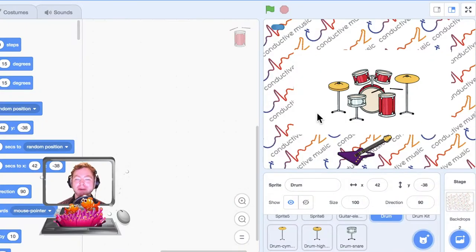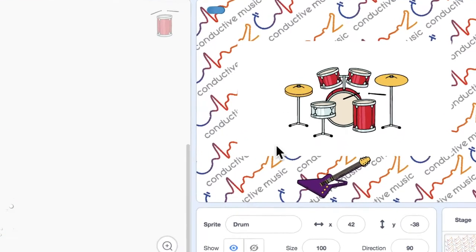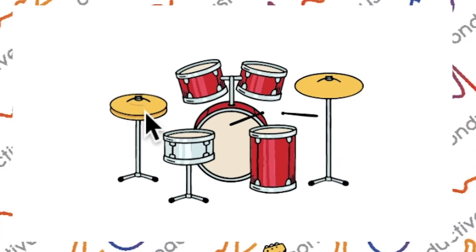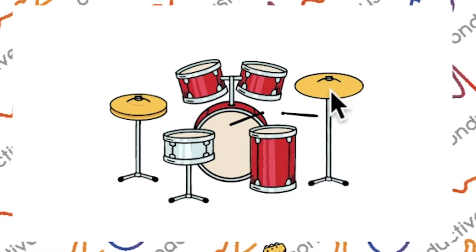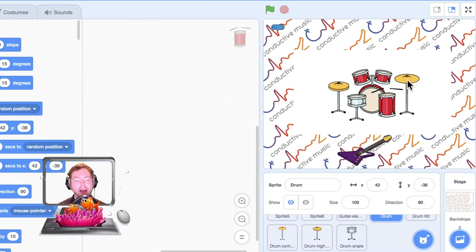Before we talk about each part of this drum kit separately, I need you to arrange it so it looks like the one I've done here on screen. I've moved the hi-hats — the double cymbal — to the far left. Next we have our snare drum, then behind that our toms on our kick or bass drum — the biggest drum. Then we have our large floor tom and on the far right our cymbal. Arrange it like that and I'll talk to you about what each one does.